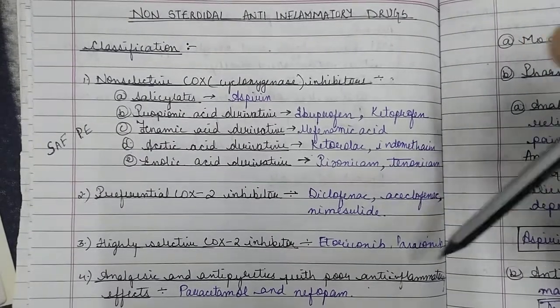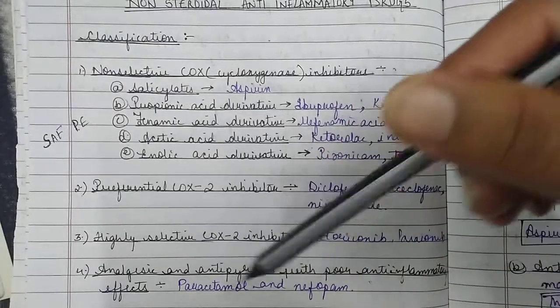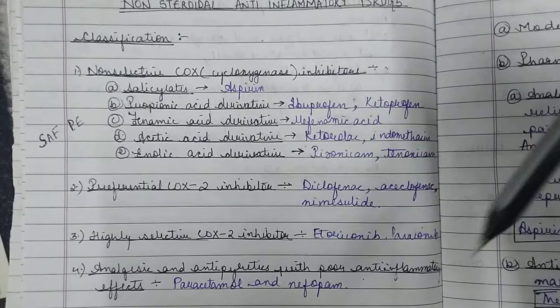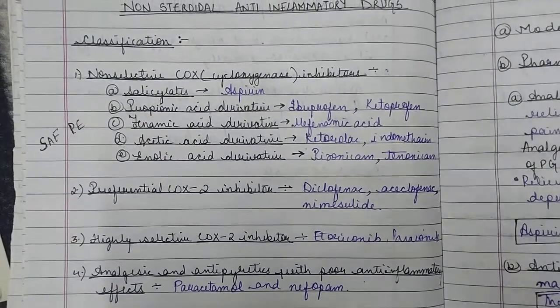Parecoxib is not used. Etoricoxib is used as analgesic and antipyretic with poor anti-inflammatory effects. We also have paracetamol and nefopam. Now we are going to talk about the mechanism of action.